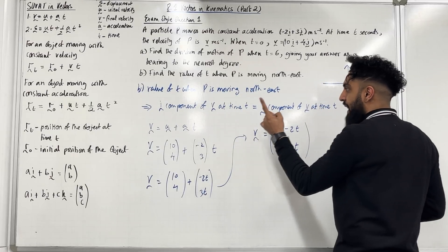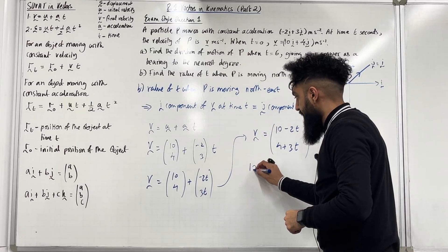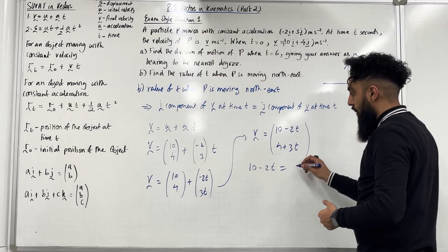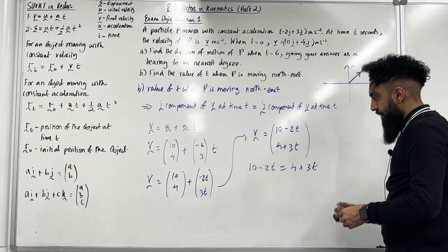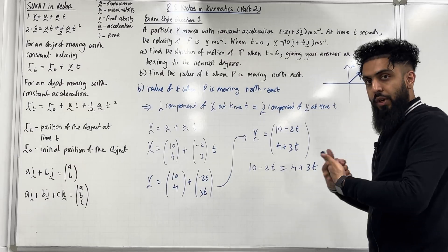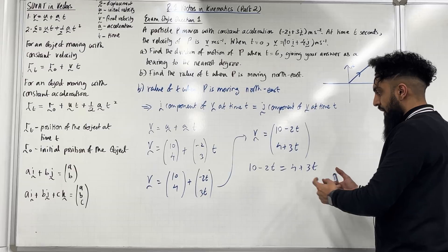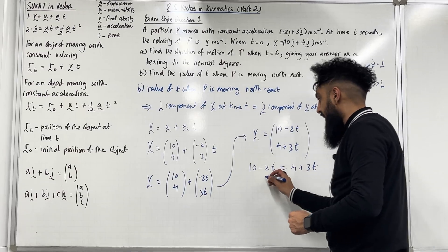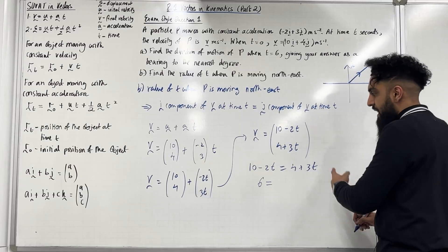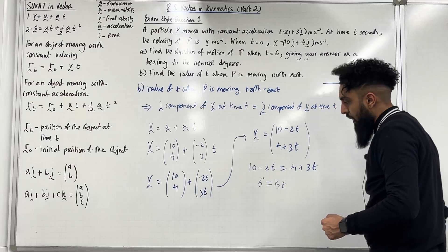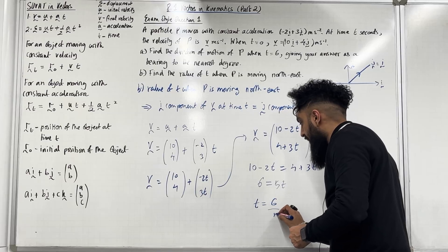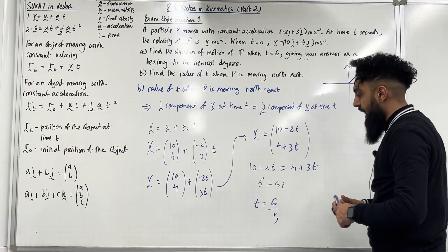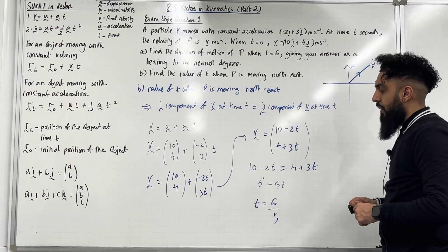The i component of V at time T is (10 − 2T), and this must equal the j component (4 + 3T). Solving: 10 − 4 = 3T + 2T, so 6 = 5T, hence T = 6/5. The value of T when P is moving northeast is T = 6/5. That completes part B and exam style question 1.